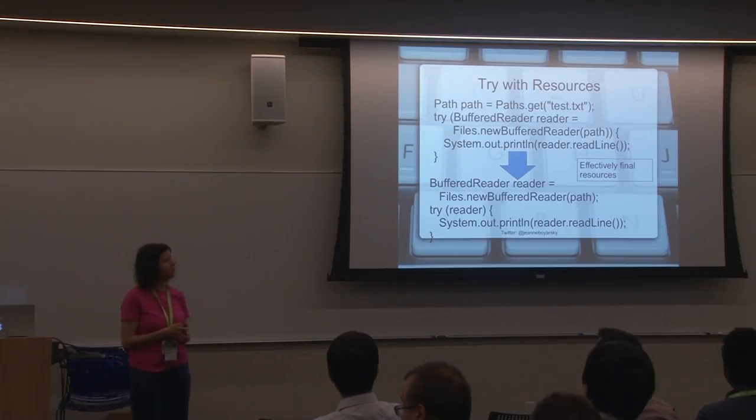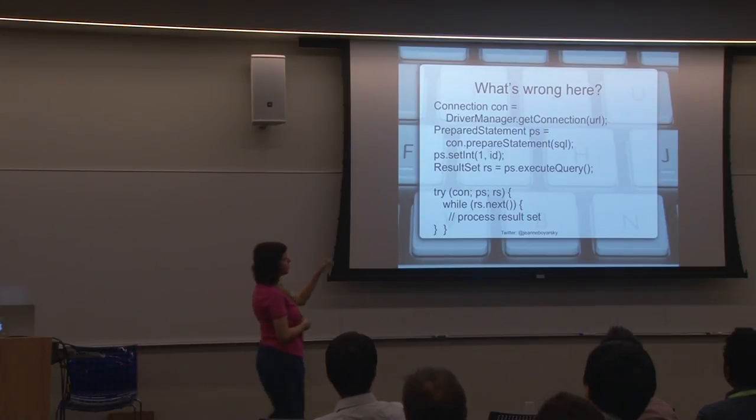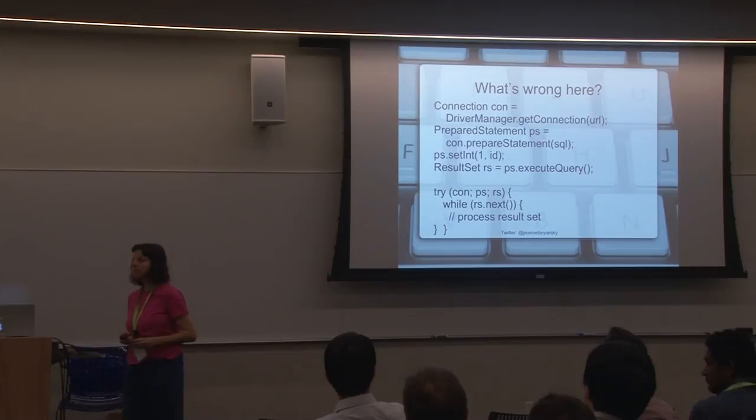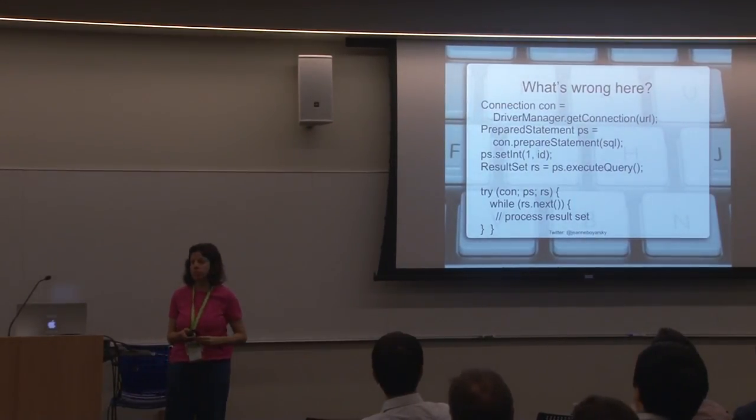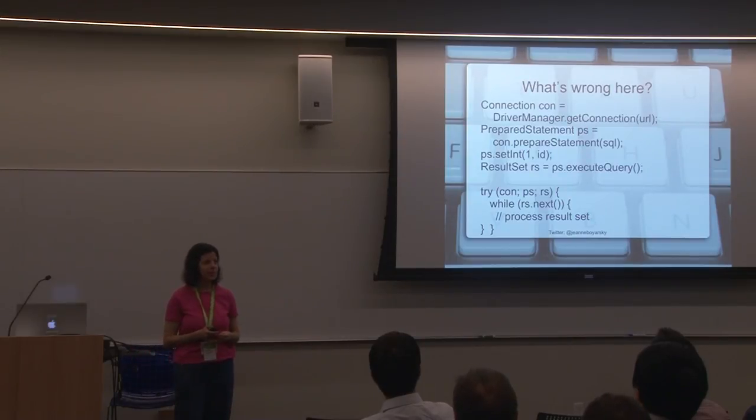Now, first brain teaser of the morning. Why doesn't this work? Any ideas? Well, they are closed in order, sort of, but you're close. Try with resources is smart enough to close things in reverse order, just like in Java 7. So that's a good guess, but that's not the problem with the code.